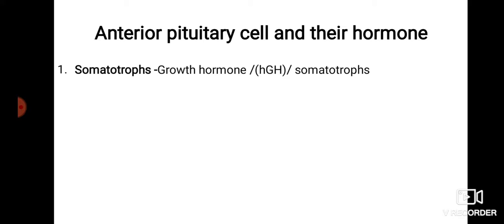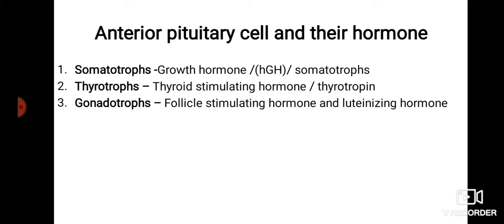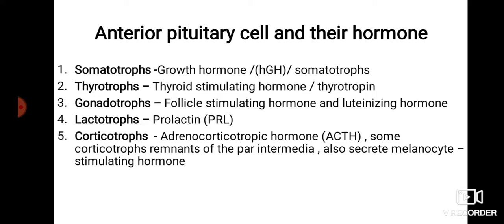The anterior pituitary cells and their hormones: somatotrophs are cells that secrete growth hormone, also known as human growth hormone or somatotrophin. Thyrotrophs secrete thyroid stimulating hormone. Gonadotrophs secrete follicle stimulating hormone and luteinizing hormone. Lactotrophs secrete prolactin. Corticotrophs secrete adrenocorticotrophic hormone. Some corticotrophs in the pars intermedia also secrete melanocyte stimulating hormone.